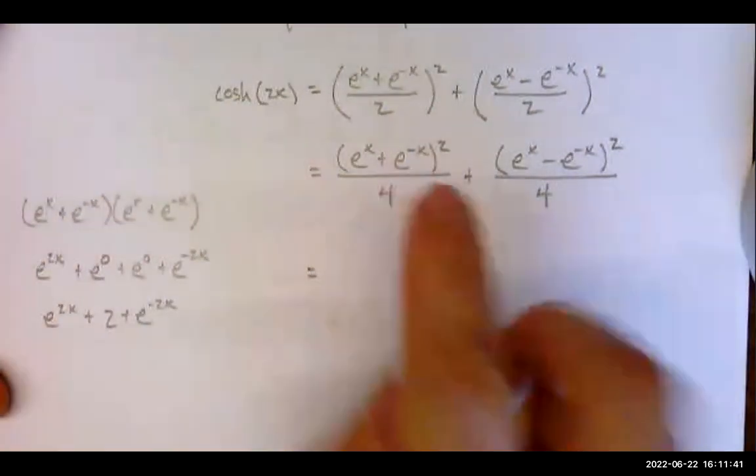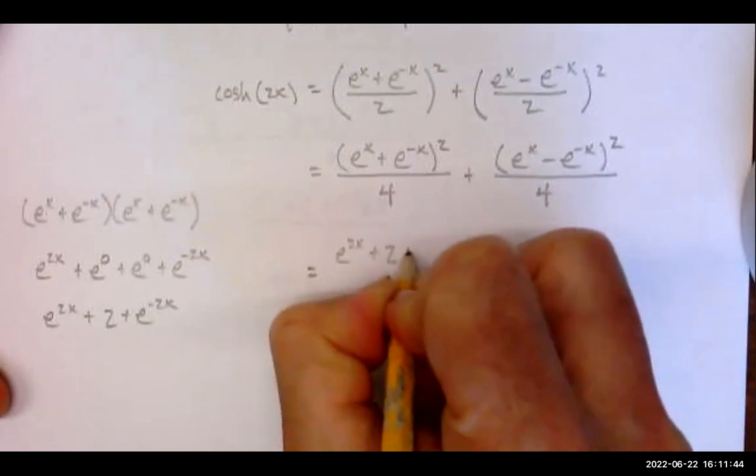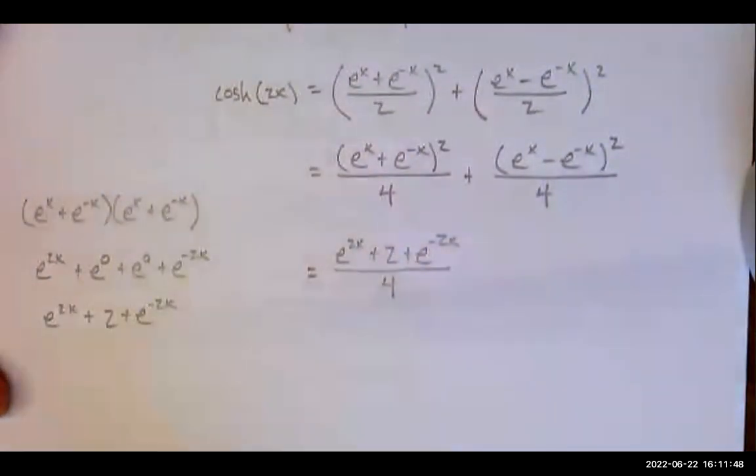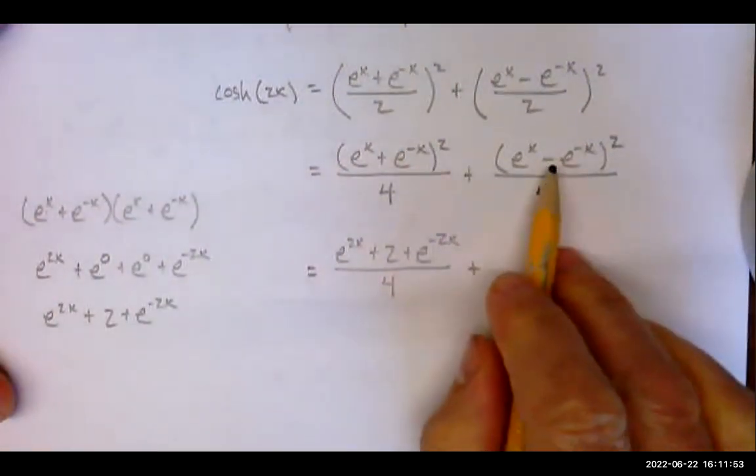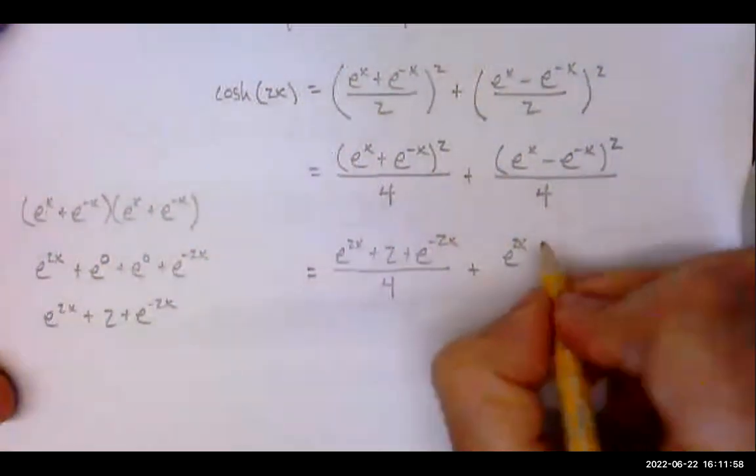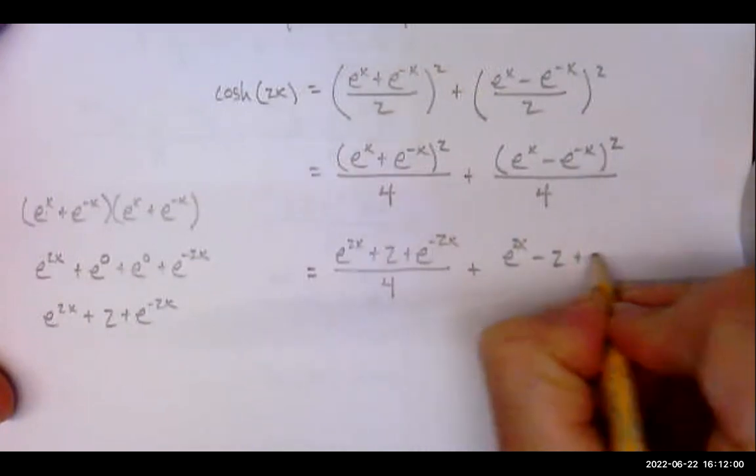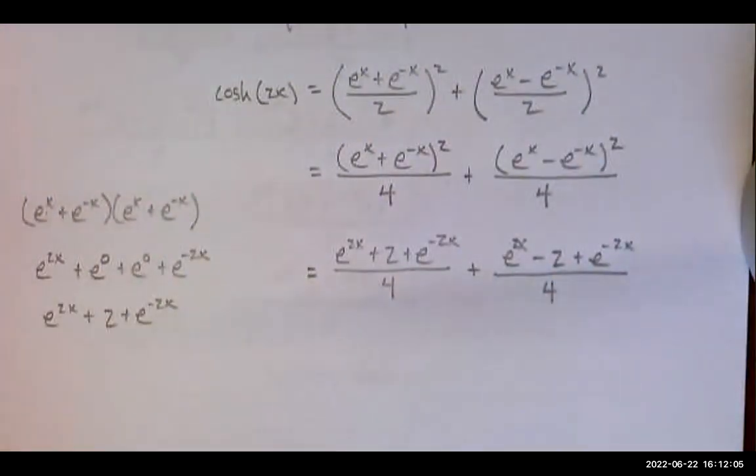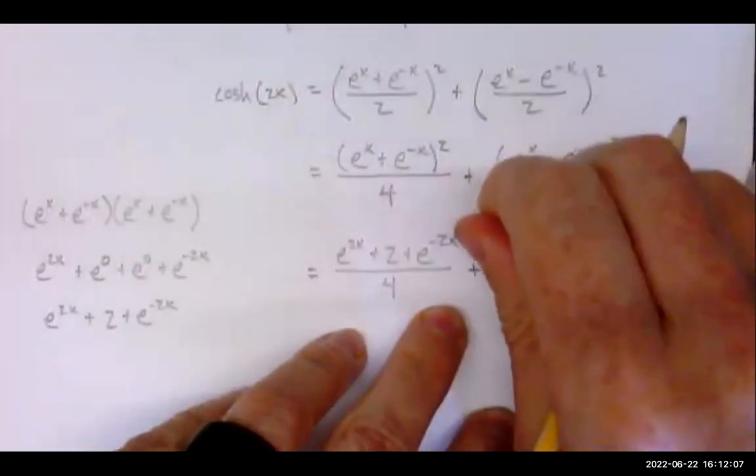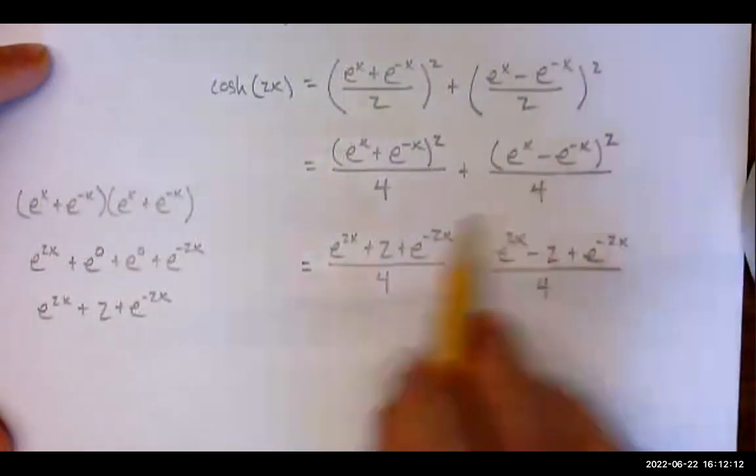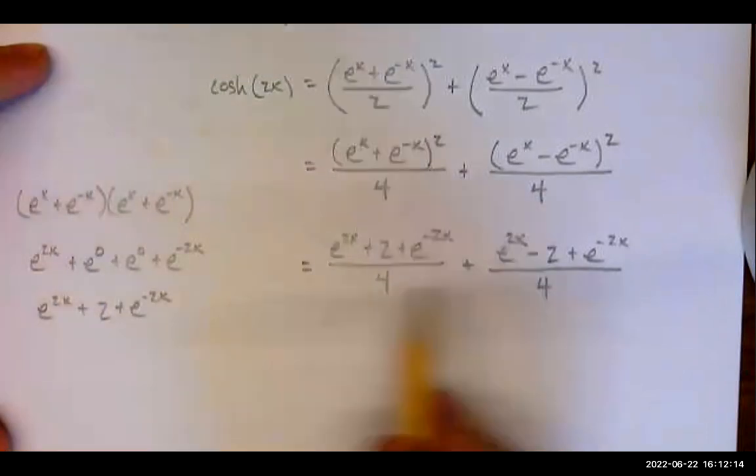Okay, so all of this right here, e to the 2x plus two plus e to the negative 2x, and that's over four. Something similar here. Notice we're subtracting, so that's going to work out. e to the 2x minus two plus e to the negative 2x.